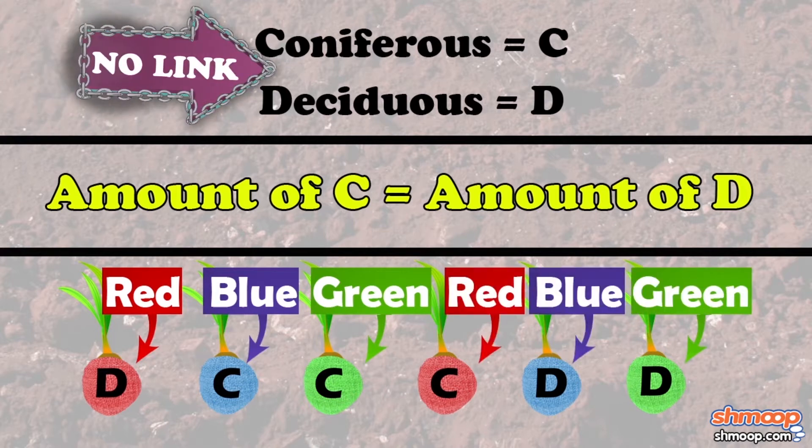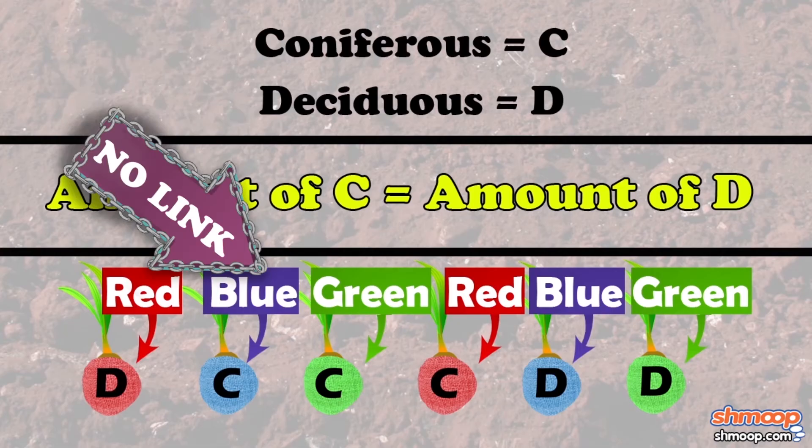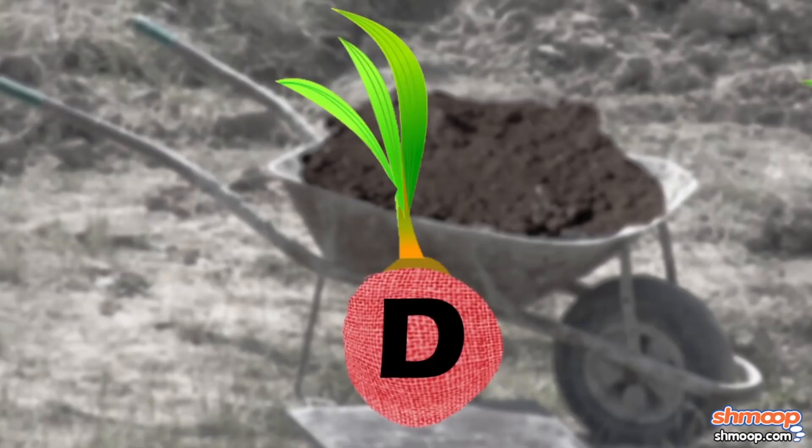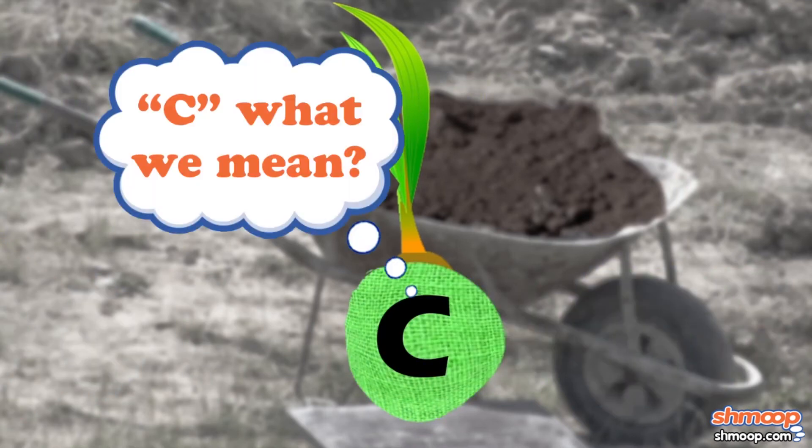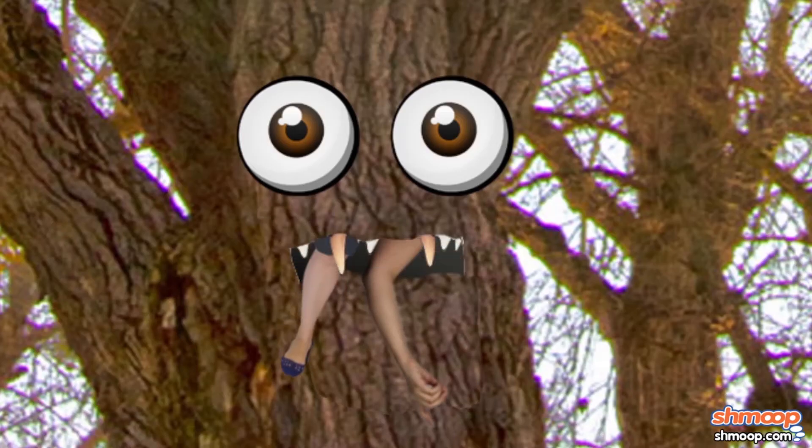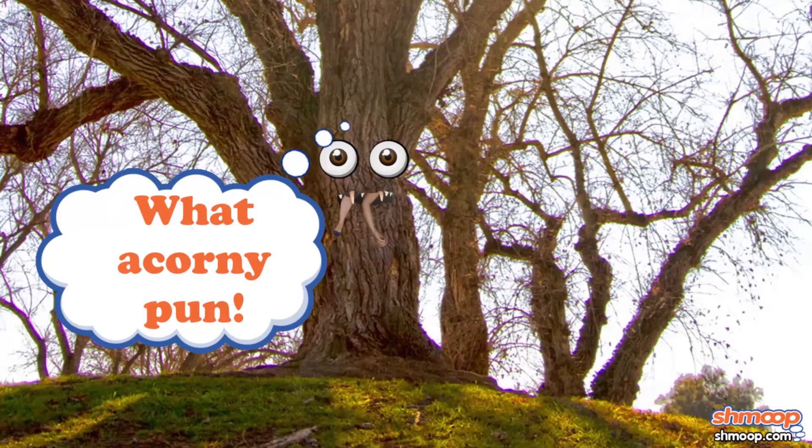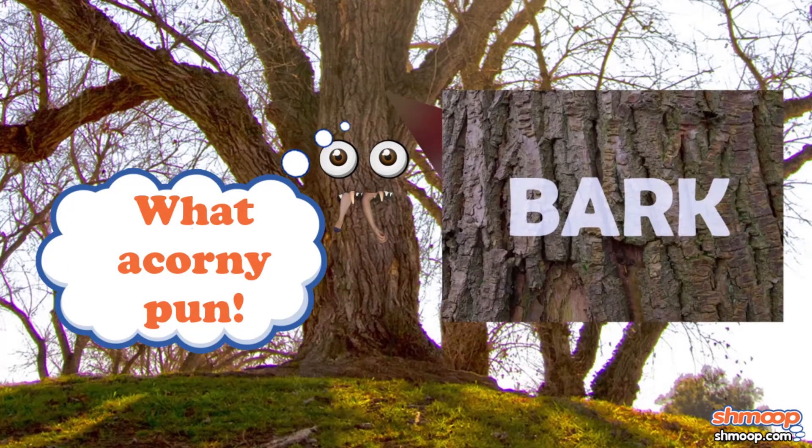So there's no link between tree-type and burlap wrapping. You might have a deciduous tree wrapped in red, blue, or green. And the same with the coniferous ones. No, not the carnivorous ones. Besides, their bark is worse than their bite.